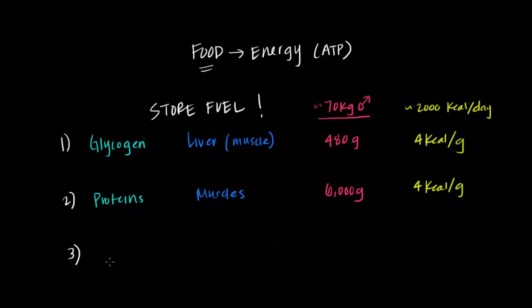Now finally, the third type of fuel that our body stores is in the form of fats. And these fats are actually stored up in specialized tissue in our body called adipose tissue. Now if we were to tally up how many grams of adipose tissue a 70 kilogram man had, it would actually amount to a much higher amount than both proteins and glycogen combined. In fact, it's somewhere around 12,000 grams of fat in an average 70 kilogram healthy male.